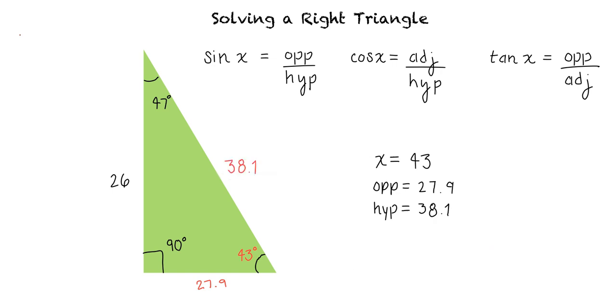Okay, so our final answer is x equals 43, opposite equals 27.9, hypotenuse equals 38.1, right? That's correct.